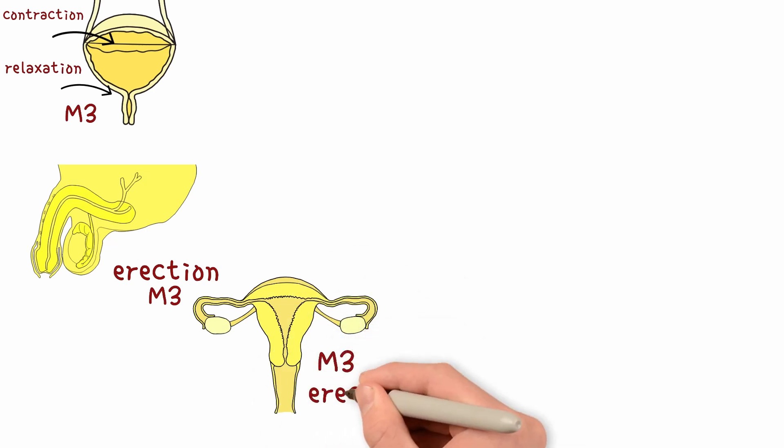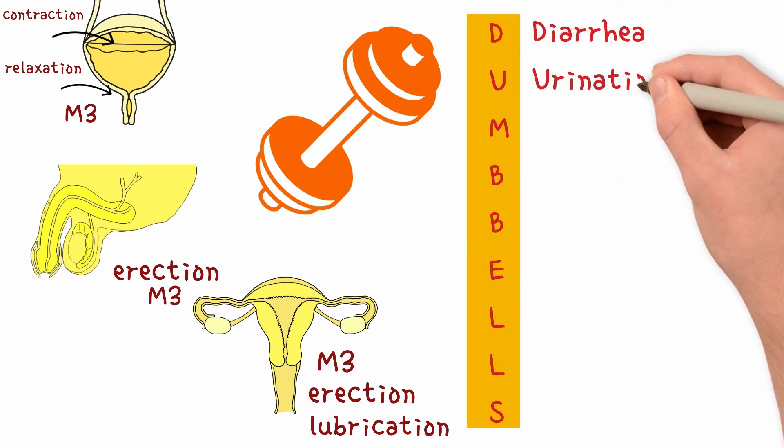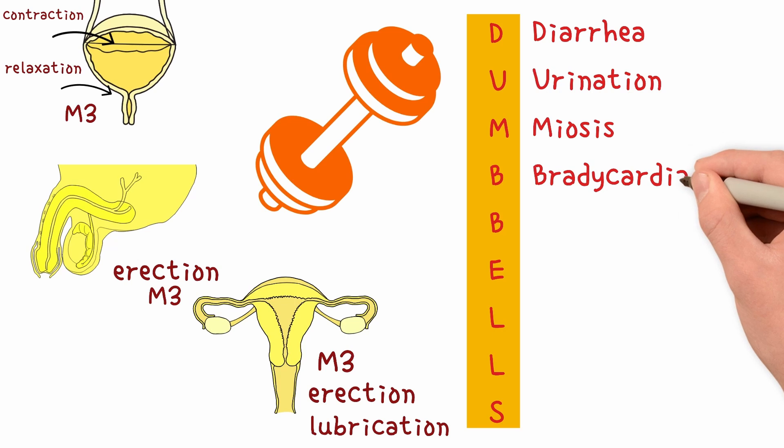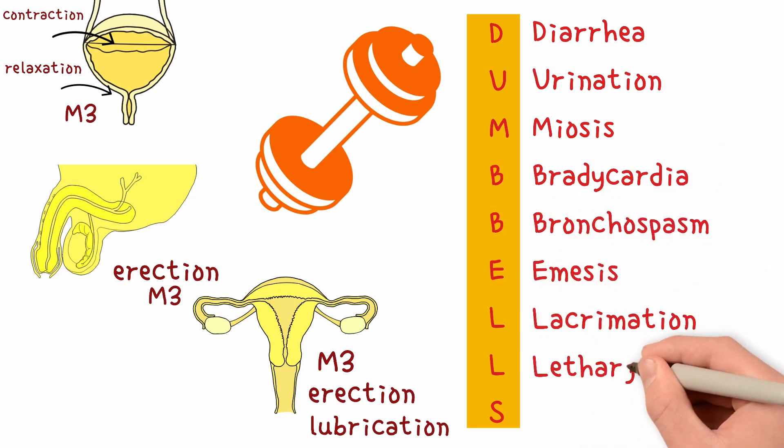In females, M3 causes clitoral erection and vaginal lubrication. Legends remember these functions with the mnemonic DUMBBELLS – diarrhea, urination, miosis, bradycardia, bronchospasm, emesis, lacrimation, lethargy, and salivation.